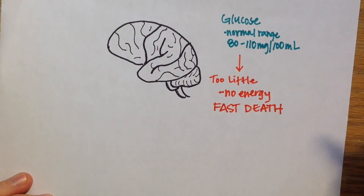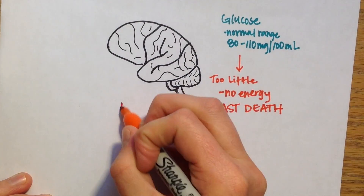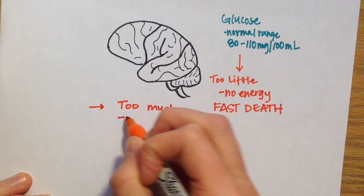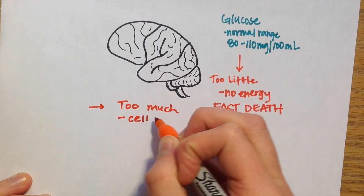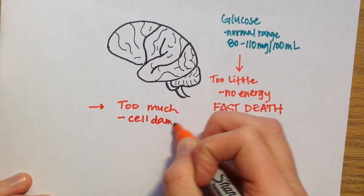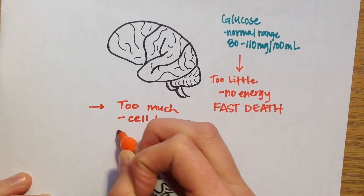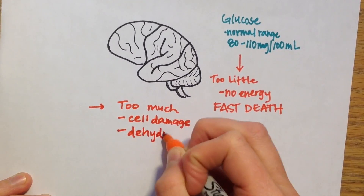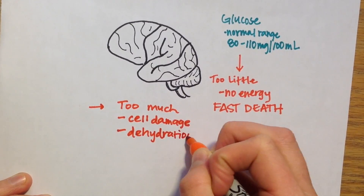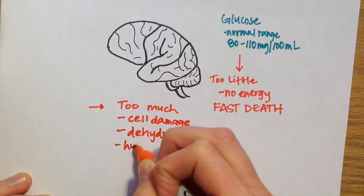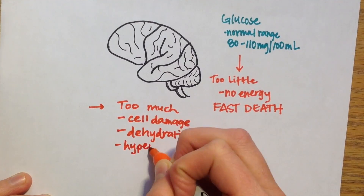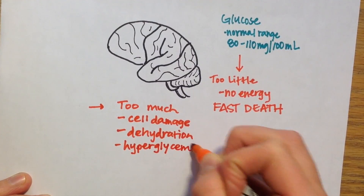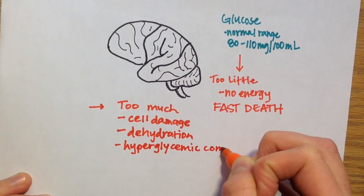If there is too much plasma glucose, it leads to endothelial cell damage and dehydration due to diuresis, which is increased or excessive production of urine. Very high plasma glucose can also increase the plasma osmolarity, which will dehydrate the CNS and lead to hyperglycemic coma.